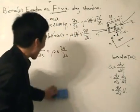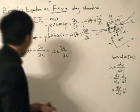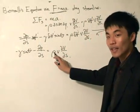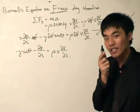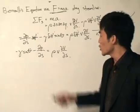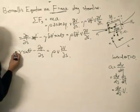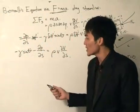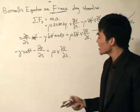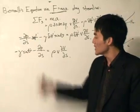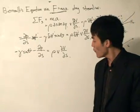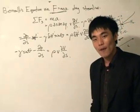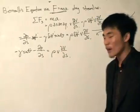After eliminating the volume, we get: minus specific weight times sine theta, minus ∂P/∂S equals density times V times ∂V/∂S. That is the differential form of Bernoulli's equation. Note that the density is still present, so we have not yet assumed the fluid is incompressible — it can still be compressible. This is a generalized form. In the next video, we will tackle the integration of this equation.